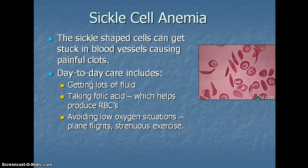They need to make sure they're taking enough folic acid. Folic acid is important because it is involved in the production of red blood cells, and people with sickle cell anemia need to produce more blood cells. It's also important that somebody with sickle cell anemia avoid low-oxygen situations, such as plane flights or strenuous exercise.